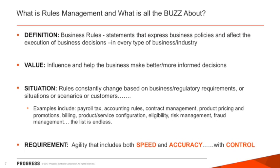I'd like to start with a definition to make sure everybody is on the same page. What is rules management? From a market perspective, people call it business rules management — we talk about rules engines and different capabilities. The best definition I could find is that business rules are statements that express specific policies, and they affect the execution of making decisions. Based upon how these rules are implemented, different decisions or outcomes may occur. Within business applications, many of you have hard-coded these, or some have even built your own rules engines to handle those if-then-else decision-making statements.